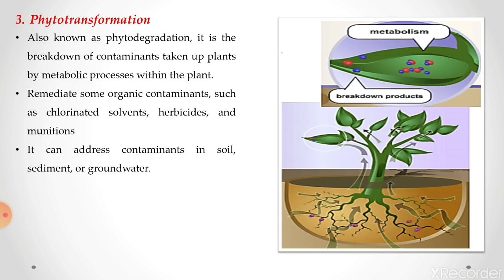The third method is phytotransformation, also known as phytodegradation. It is the breakdown of contaminants through transformation during the plant's metabolic processes. It can remediate some organic contaminants such as chlorinated solvents and herbicides, and can address contaminants in the soil, sediment or groundwater. During their metabolism, the plant causes transformation of the contaminant, thereby removing it from the wastewater.